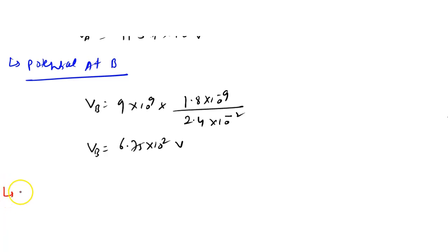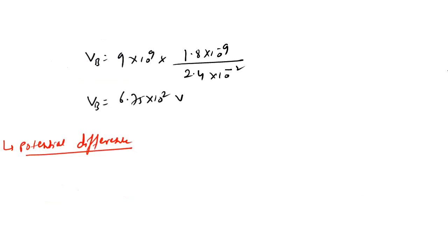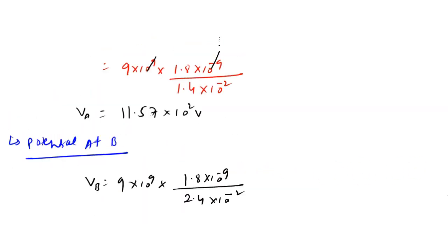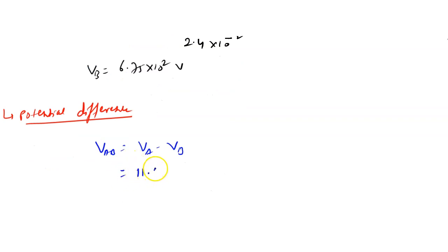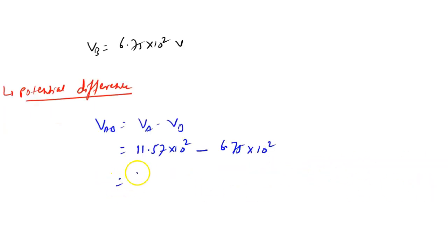For the potential difference between A and B: VAB equals VA minus VB, which is 11.57 × 10² minus 6.75 × 10². Subtracting, we get the answer 4.82 × 10² volt. This is the answer to this question. Thank you.